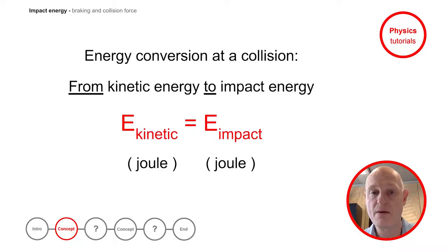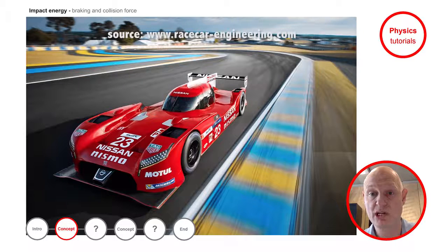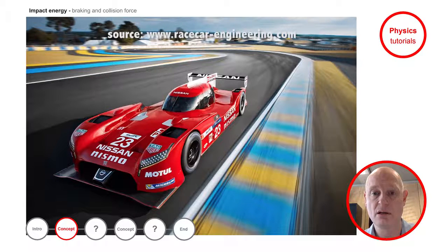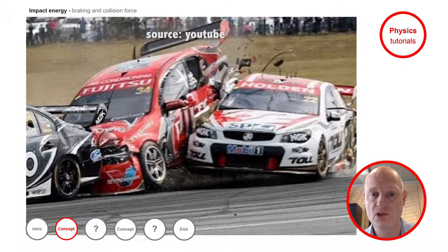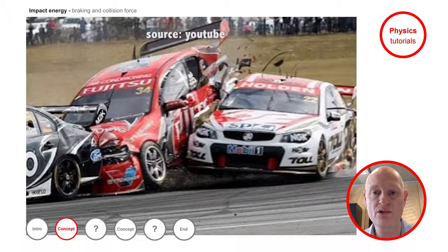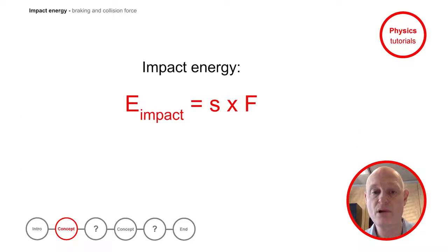When a car has a high speed, it has a lot of kinetic energy. It will result in a big braking distance, or in case of a collision when there is no time to brake, it will result in a big collision force. So both distance and force play a role in determining the impact energy. The impact energy is in fact the product of the distance and the force.